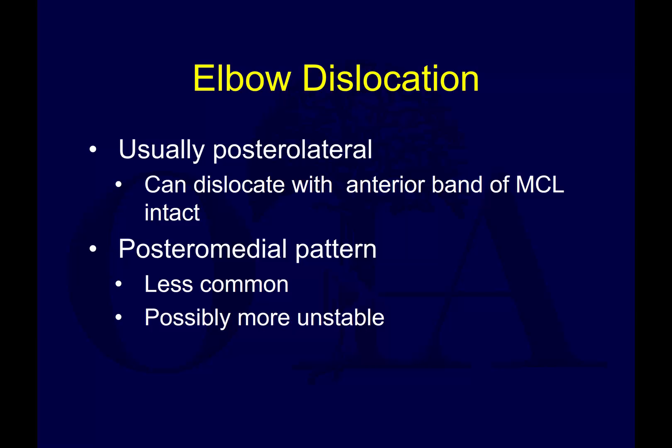It's important to understand the stabilizers. You have both static and dynamic stabilizers of the elbow. Your static stabilizers are your lateral ulnar collateral ligaments, the anterior bundle of the MCL, and the ulnohumeral joint itself. Your secondary stabilizers are the radiocapitellar joint, the capsule, and muscle insertions like the forearm flexors and extensors. Dynamic stabilizers include the muscles — the brachialis, the triceps — essentially muscles crossing over the elbow joint.